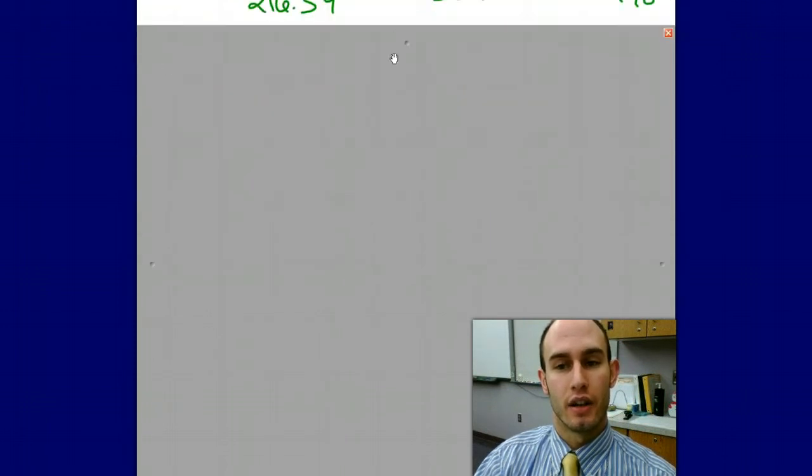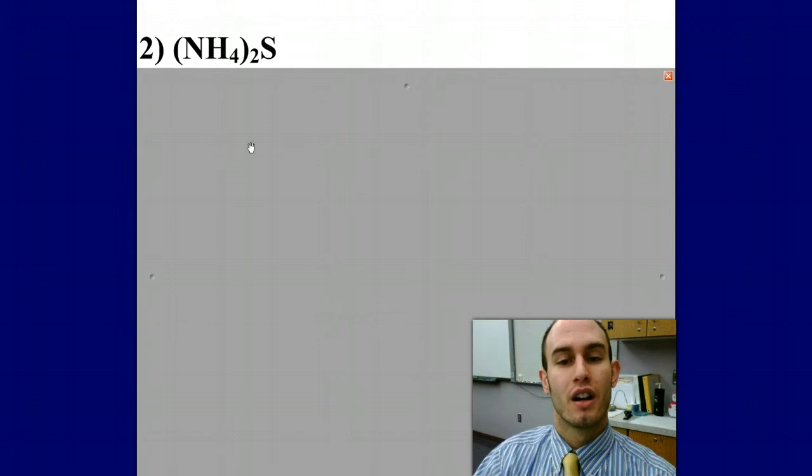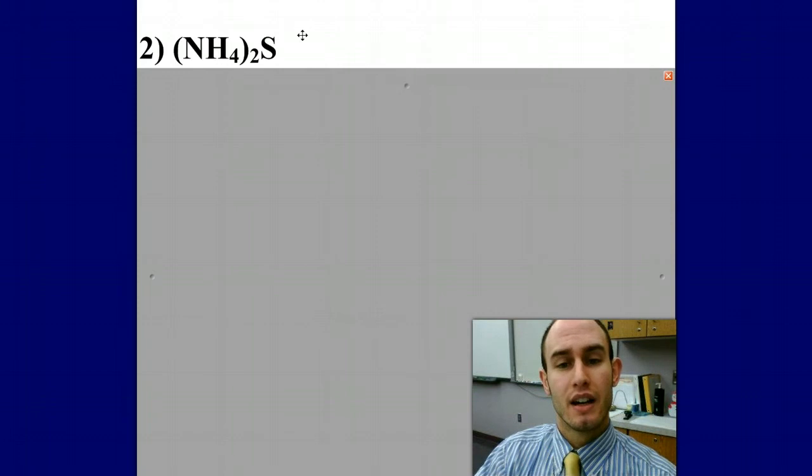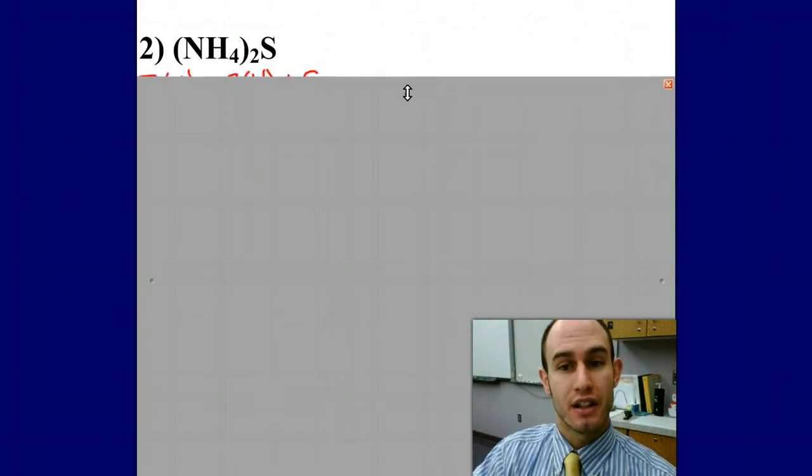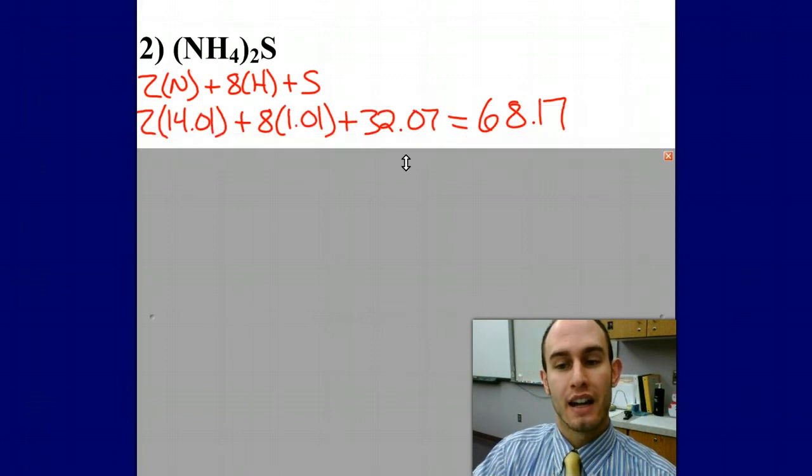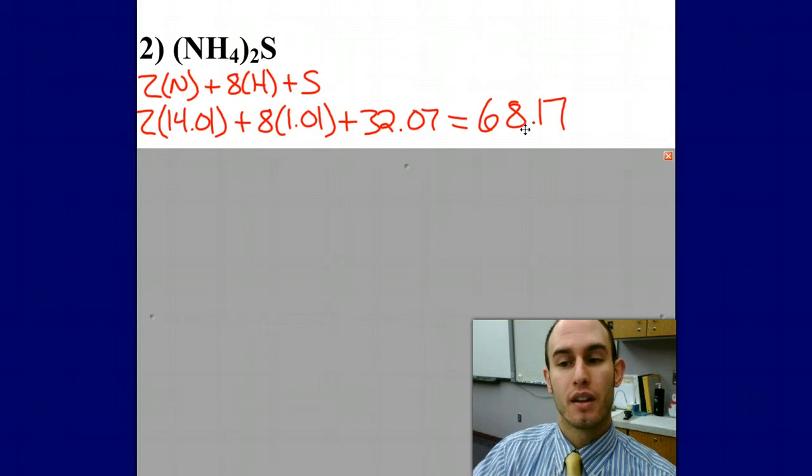Let's look at another example: (NH4)2S, ammonium sulfide. This one is a little more complicated. I'm trying to find the percent composition of nitrogen, hydrogen, and sulfur in the whole compound. I need the mass of nitrogen, hydrogen, and sulfur. I have two nitrogens because I have to distribute that in. Two times four is eight hydrogens, and I have one sulfur. Adding their atomic masses up, I get a formula mass of 68.17 AMUs.